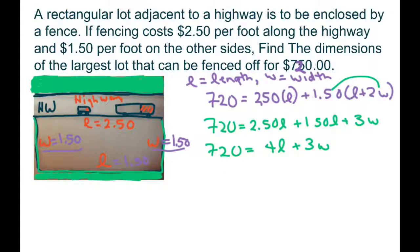Now we want to find the dimensions. So what we're going to do is we know the area equals length times width. Now we're going to solve for W here. We're going to solve for length here.